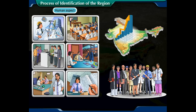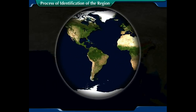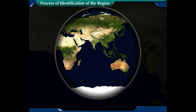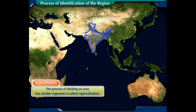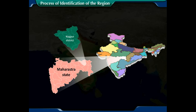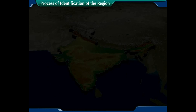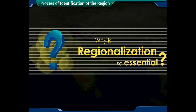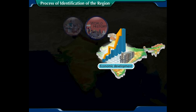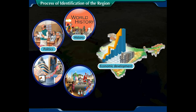Now that we know what a region is, let us learn about regionalization. The process of dividing an area into smaller segments is called regionalization — like the division of a nation into states and states into districts. Regionalization is essential because the region is a base for economic development and is very important in historical, political, economical, and sociological analysis.